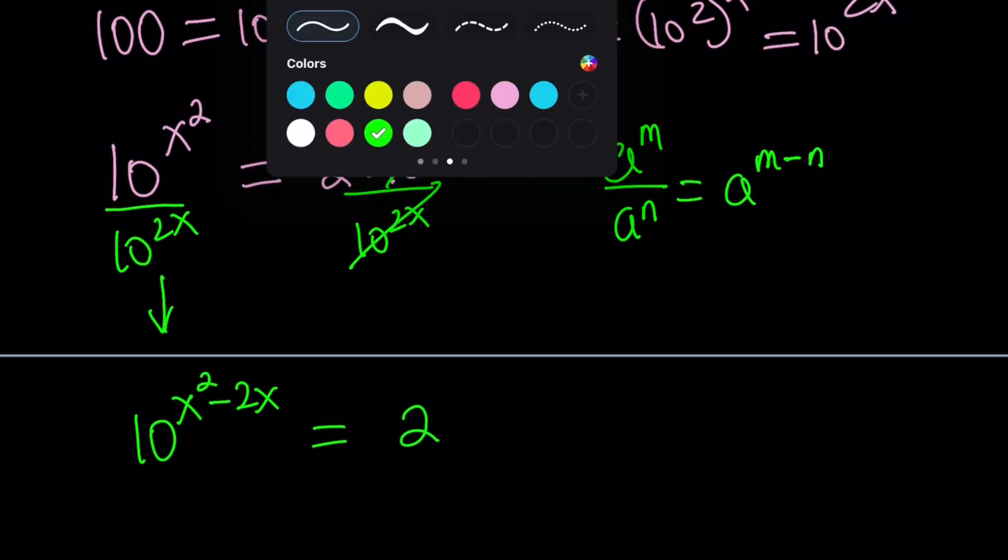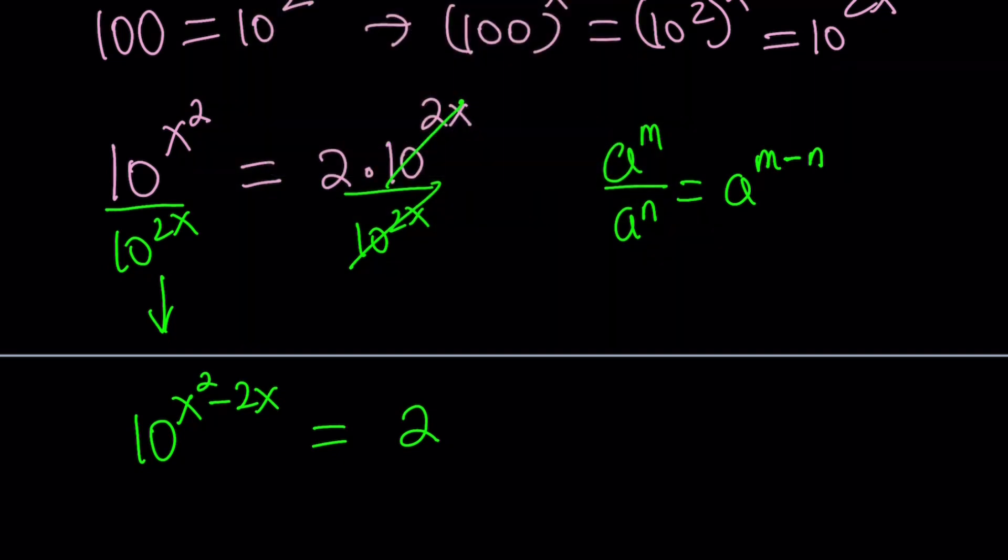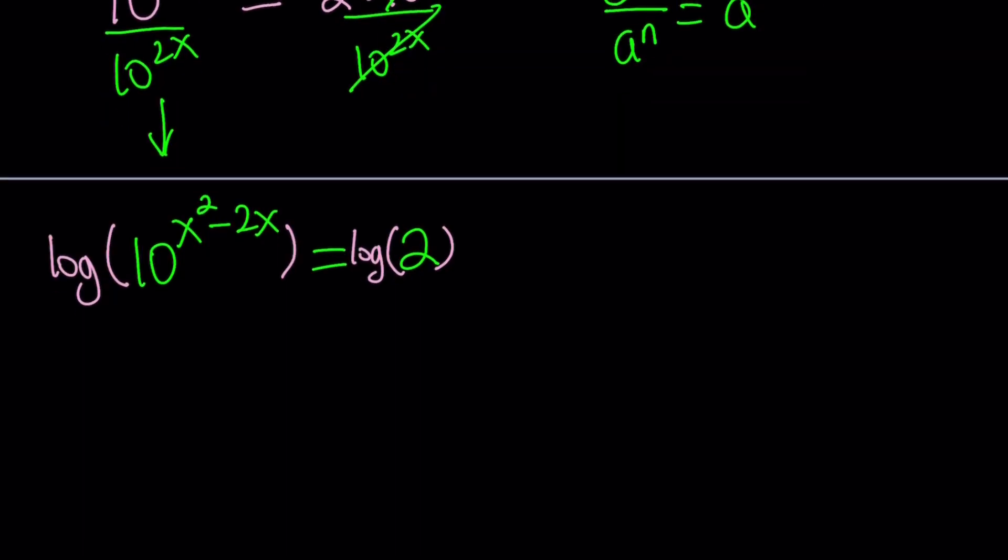And since we have 10 in the base it makes sense if we just use base 10 log. So we're going to log both sides with base 10. And since the base is 10 this exponent is going to be moved to the front and log 10 is going to be 1 in base 10. So this is going to give us x squared minus 2x equals log 2. Okay so log is base 10.